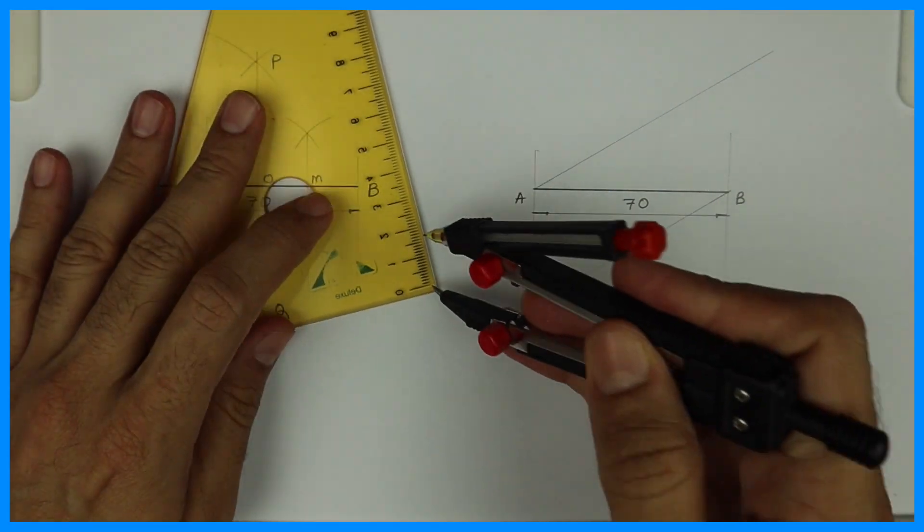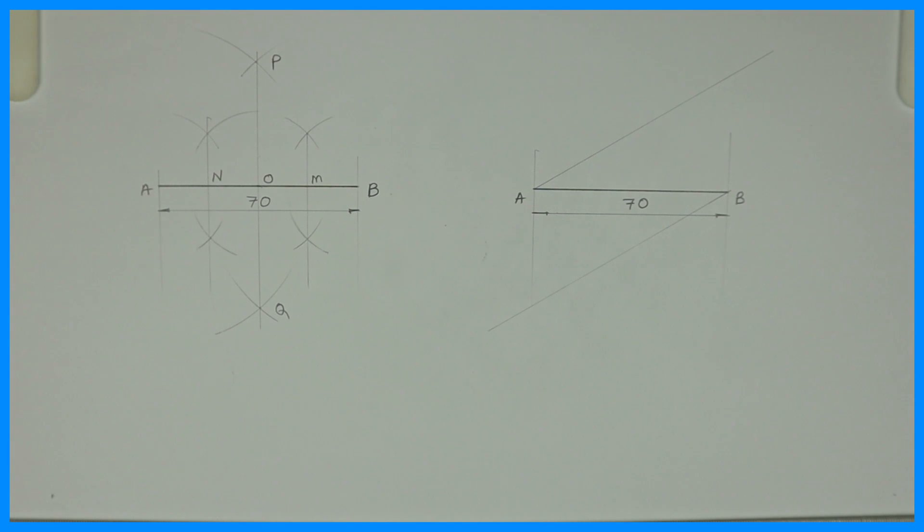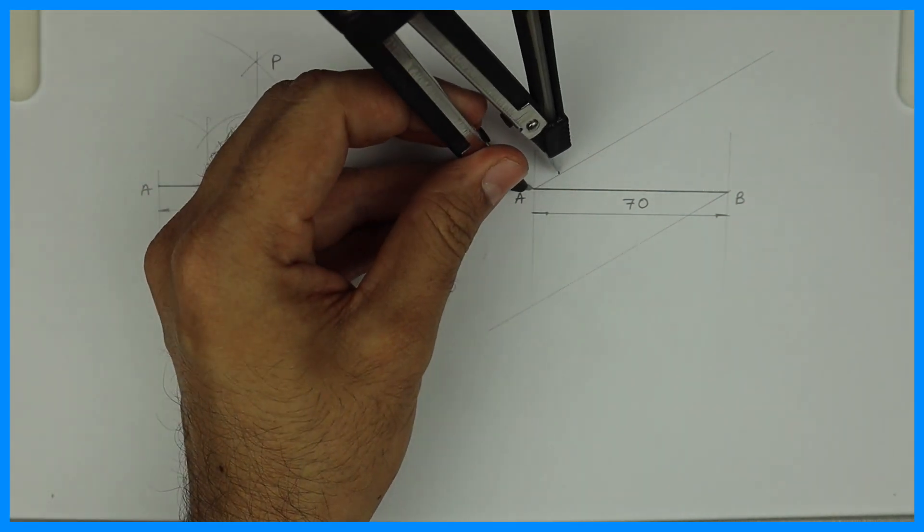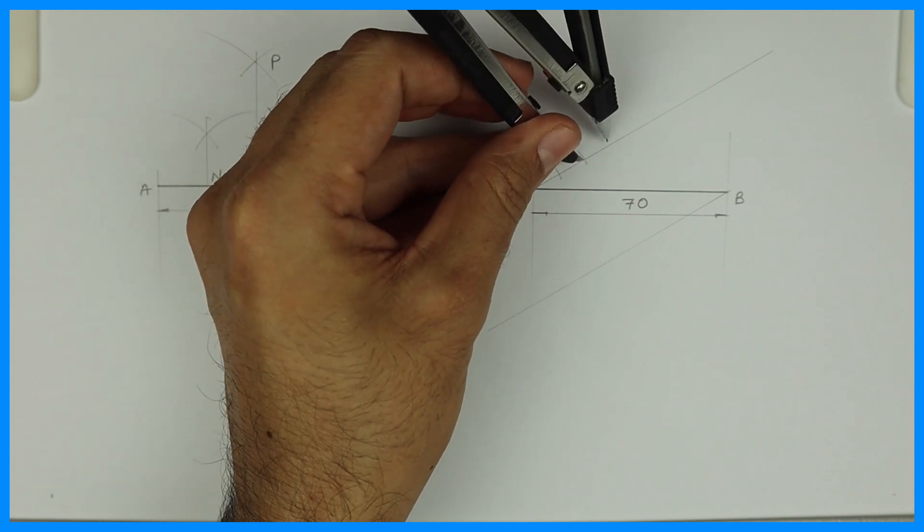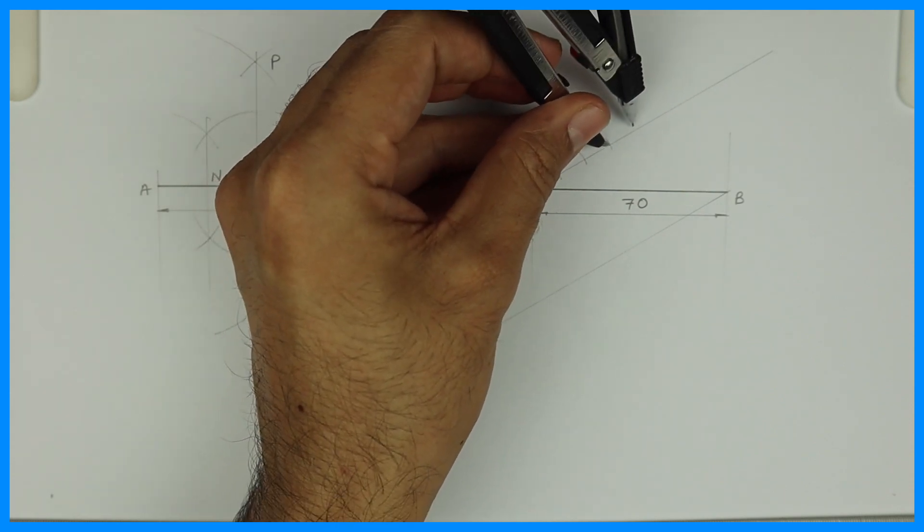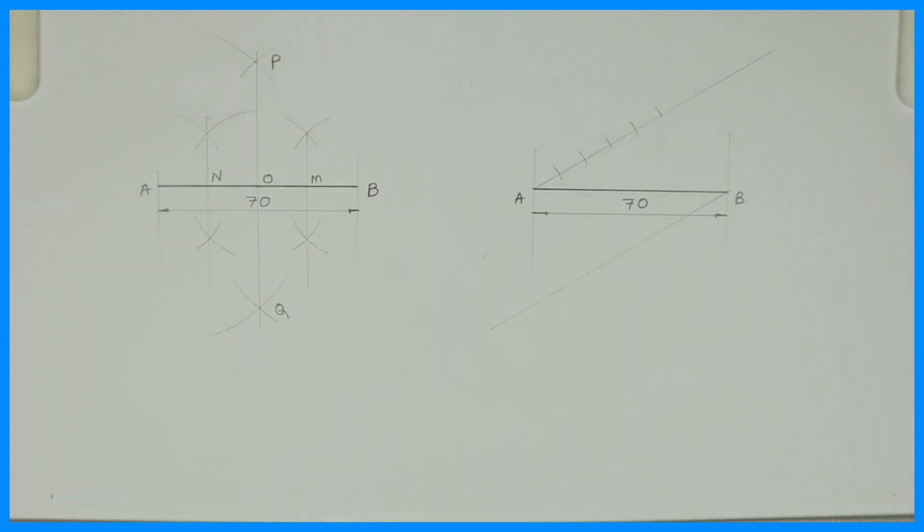Then you take a compass. And you take one centimeter, that is 10 millimeter in your compass. And from A you cut five times. One. Then again you cut from one, two. Then three. Then from three you cut four. From four you cut five. So you're cutting it five times.